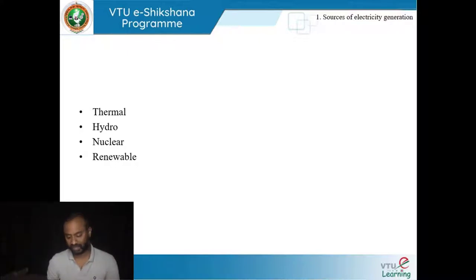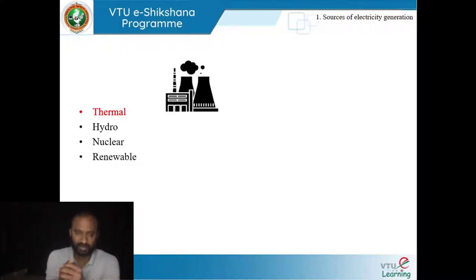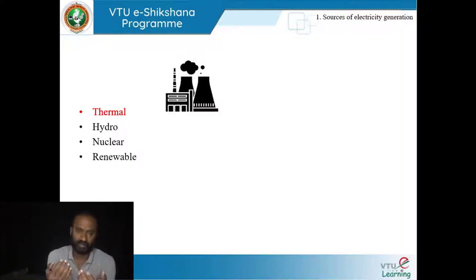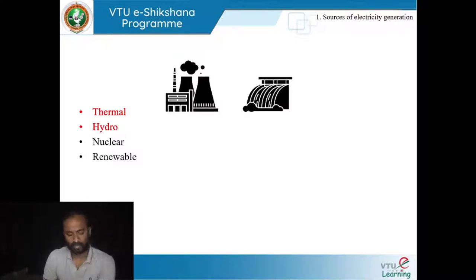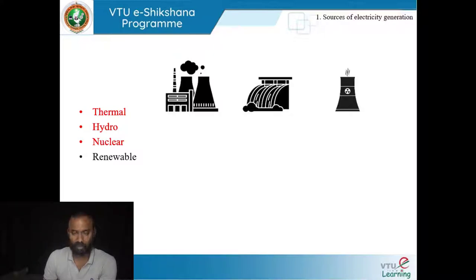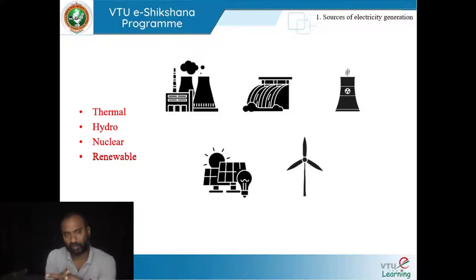The sources of electricity generation, at least in the country we live in, are majorly from four sources: thermal, hydro, nuclear, and renewable. Thermal is where we rely on fossil fuels — coal, diesel and other types. Hydro is where we largely rely on water sources. Nuclear is slowly gaining attention, and though it has criticisms, it is a very efficient and powerful source. Renewable energy is gaining a lot of attention recently, with wind turbines and solar PV panels.